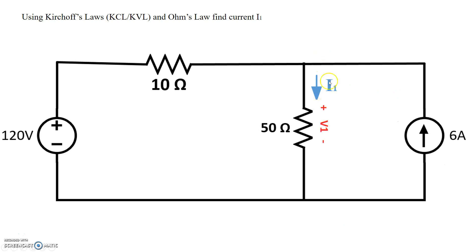For example, current I1 right here is shown as going from top to bottom. By passive sign convention, that means the voltage across this resistor is designated with a positive sign. The current always enters the plus sign and then exits on the minus sign, based on passive sign convention. So that's how we write V1.